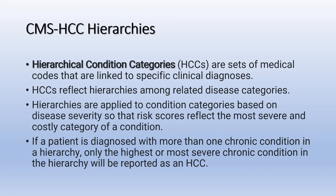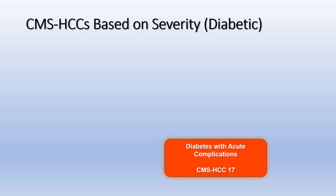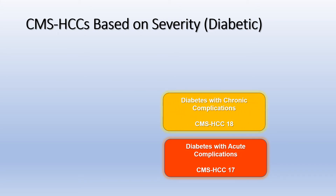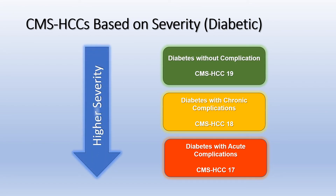If a patient is diagnosed with more than one chronic condition in a hierarchy, only the highest or most severe chronic condition in the hierarchy will be reported as an HCC. A great example of this is the diagnosis of diabetes. There are three HCCs for diabetes: HCC-17 diabetes with acute complications, HCC-18 diabetes with chronic complications, and HCC-19 diabetes without complications. HCC-17 is the highest category in the hierarchy for diabetes, as it includes the most clinically severe diagnoses. Diagnoses of type 1 DM with ketoacidosis without coma and type 2 DM with hypoglycemia with coma are examples of diagnoses in HCC-17.